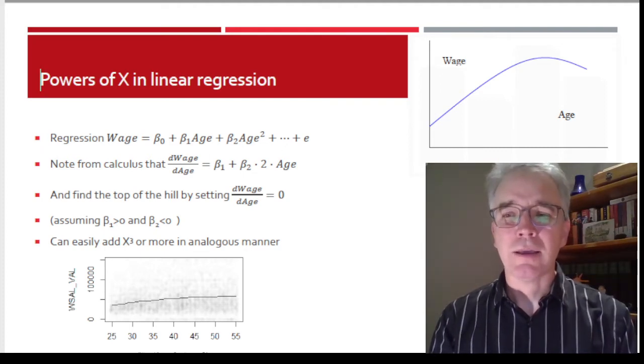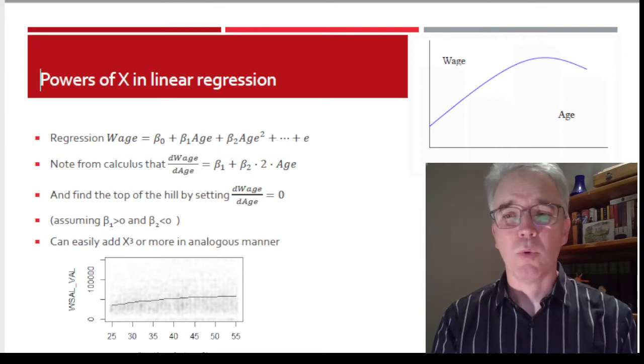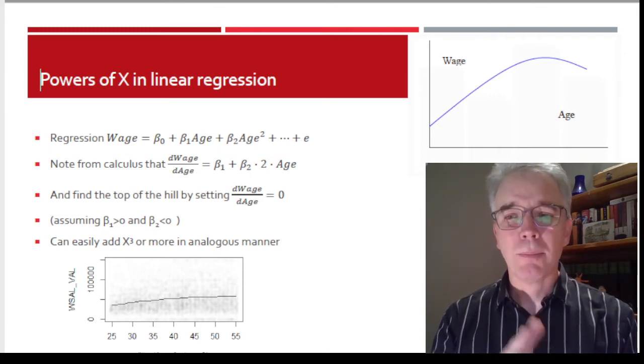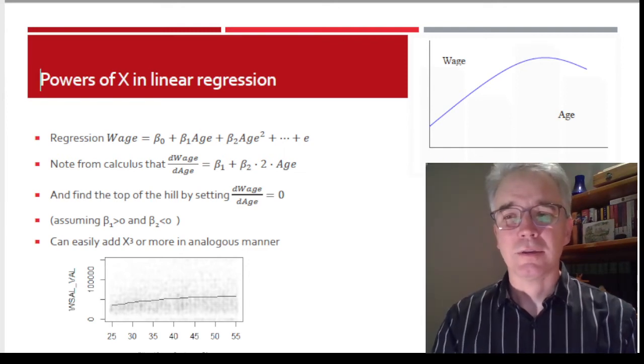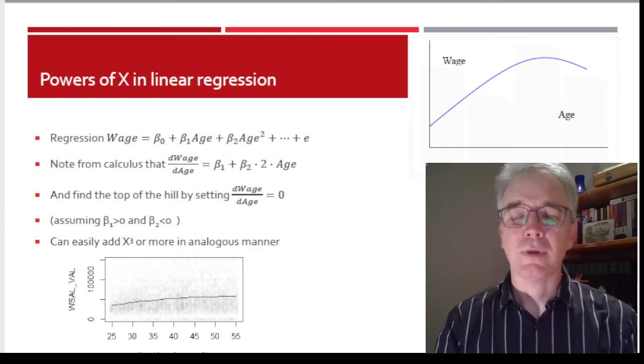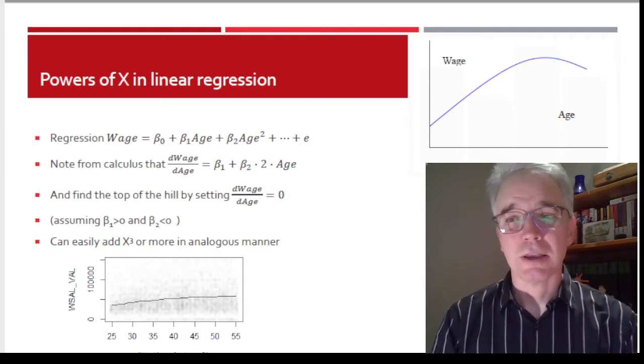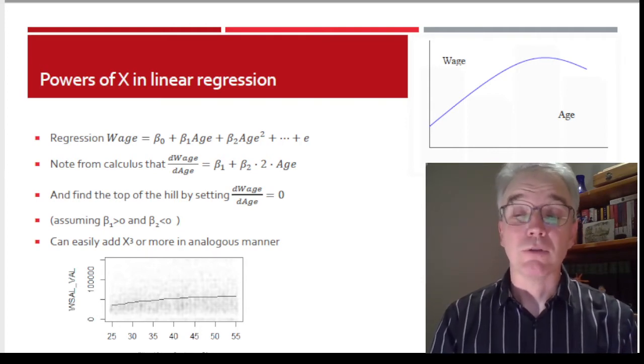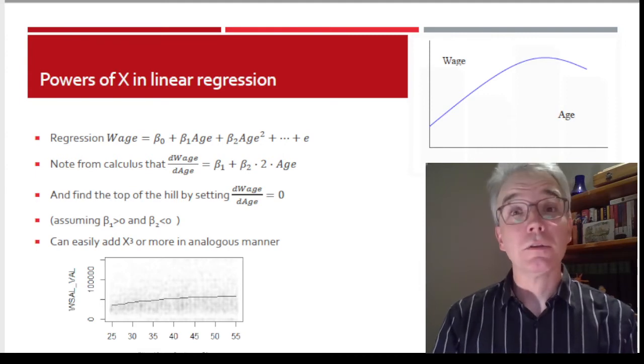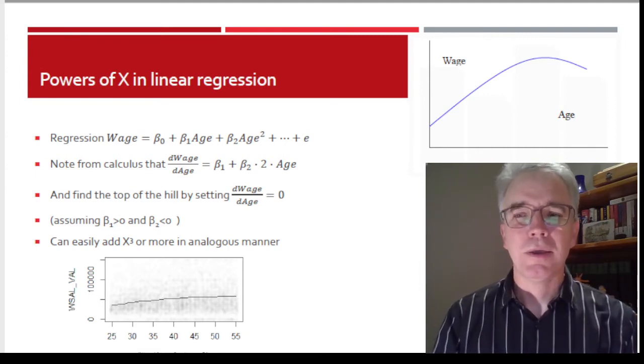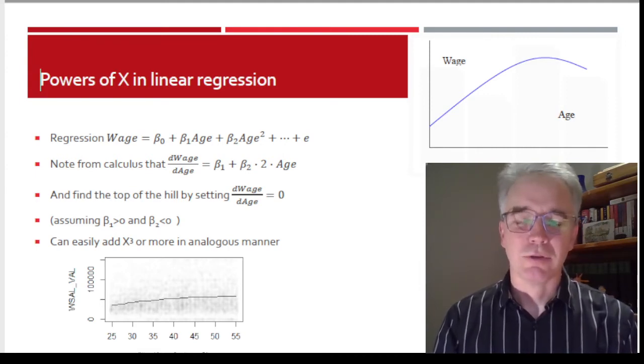And so that's allowing, as people's age increases, their wage can go up at first, but then gradually the wage increase on your birthday starts to get smaller and smaller. Eventually, you're over the hill, you stop getting a raise and maybe you actually start declining.